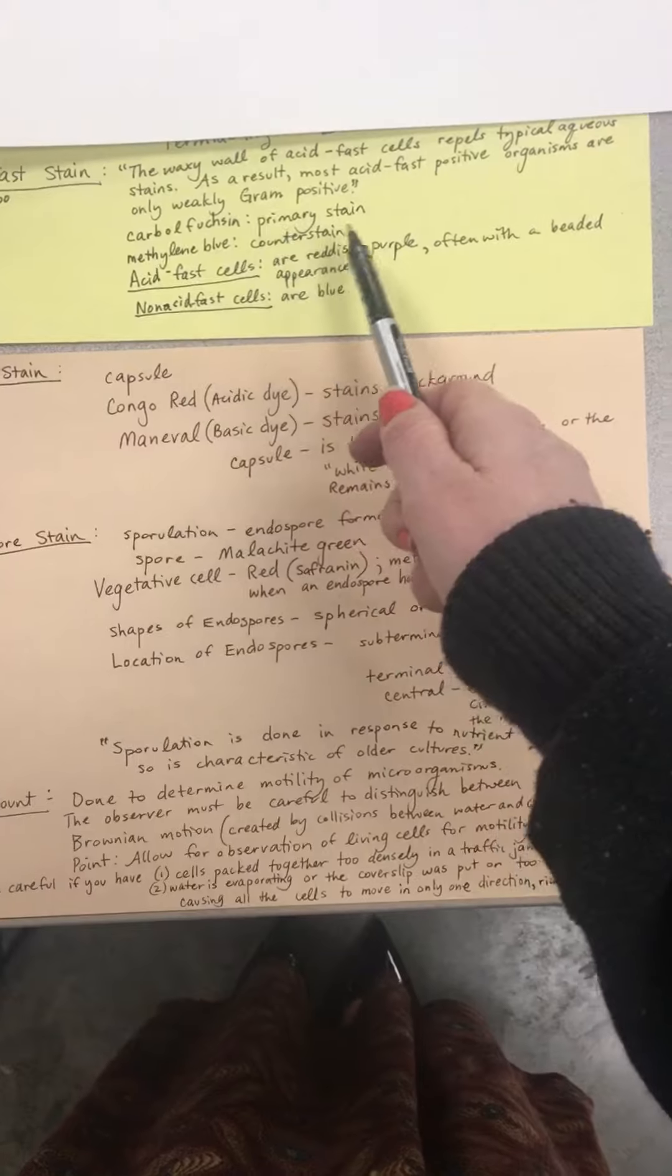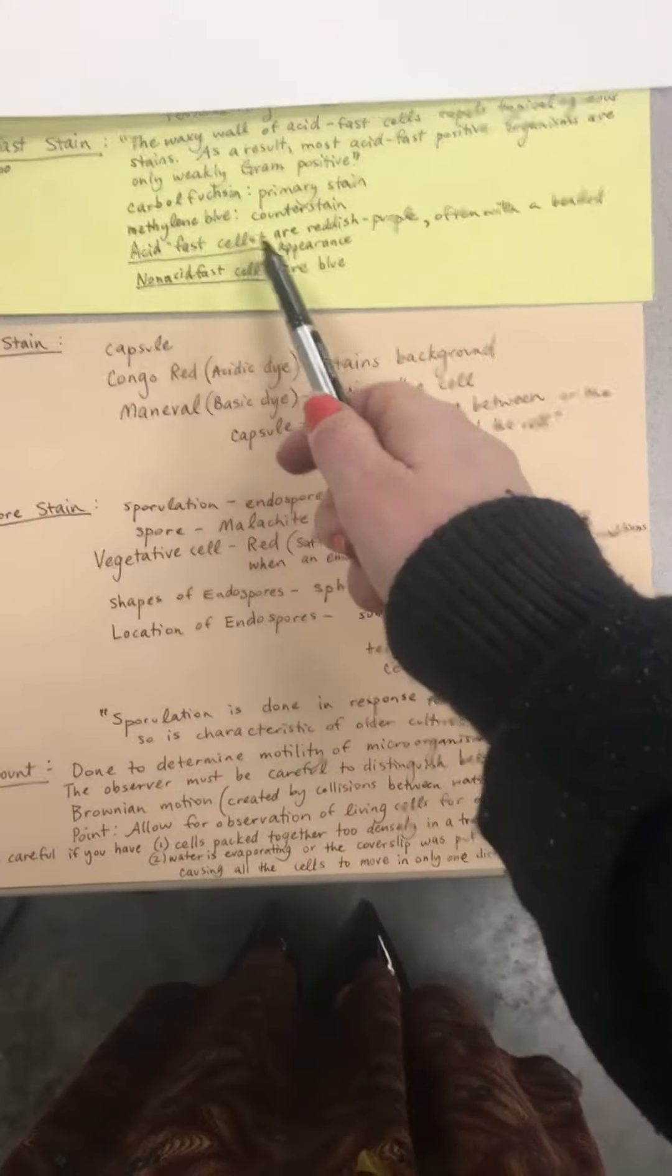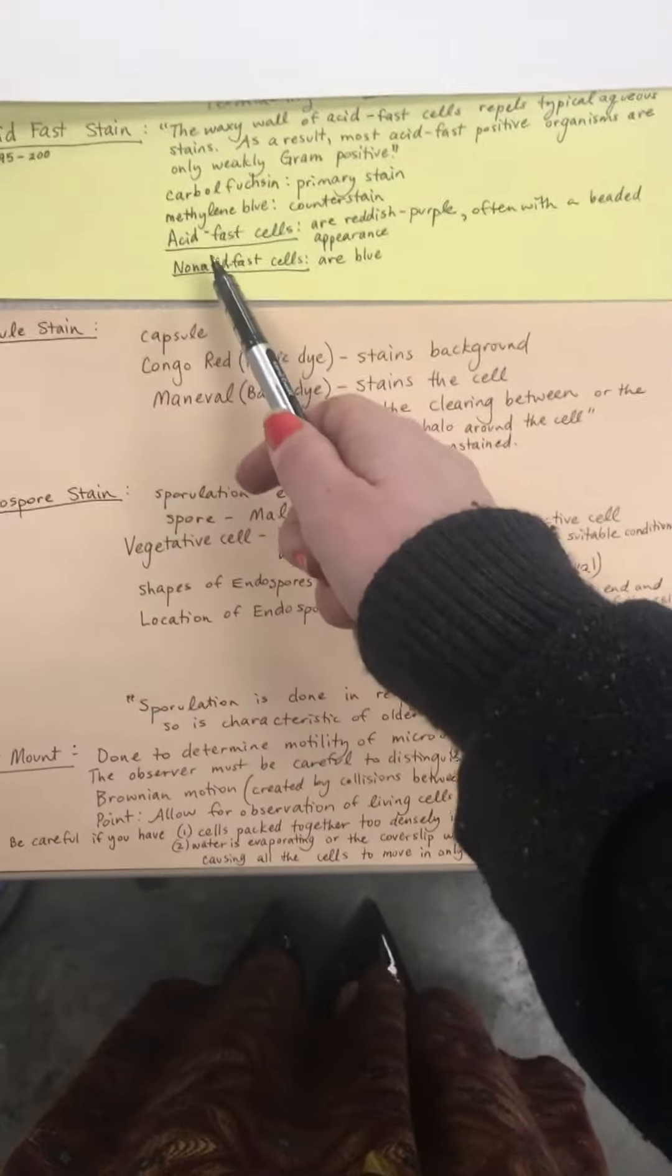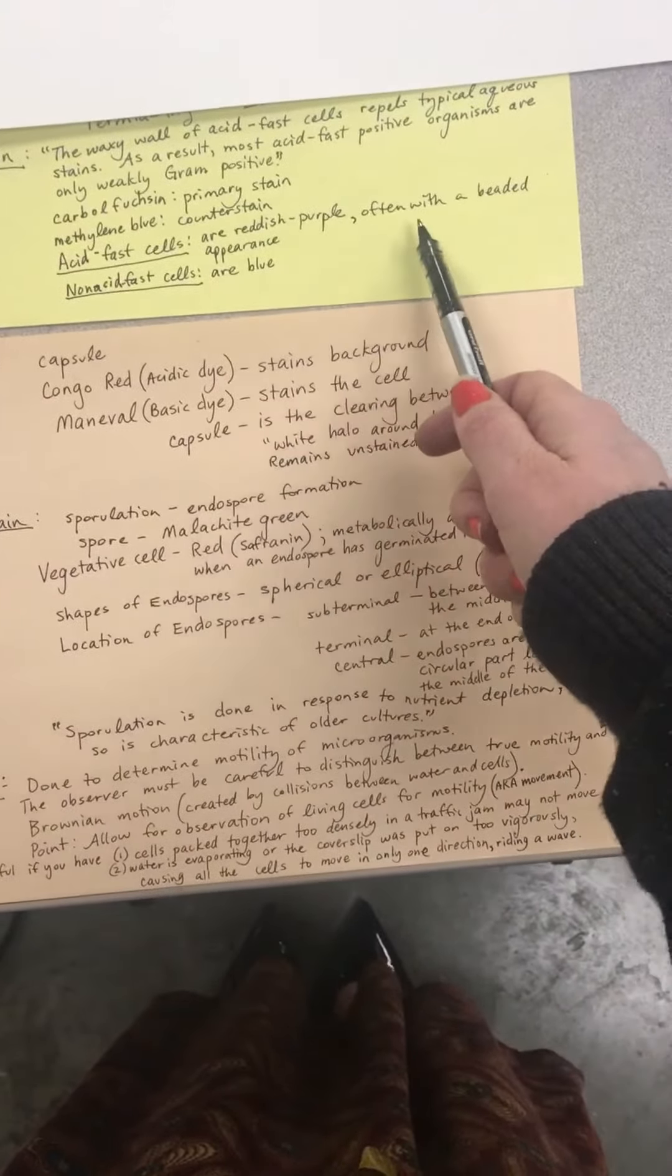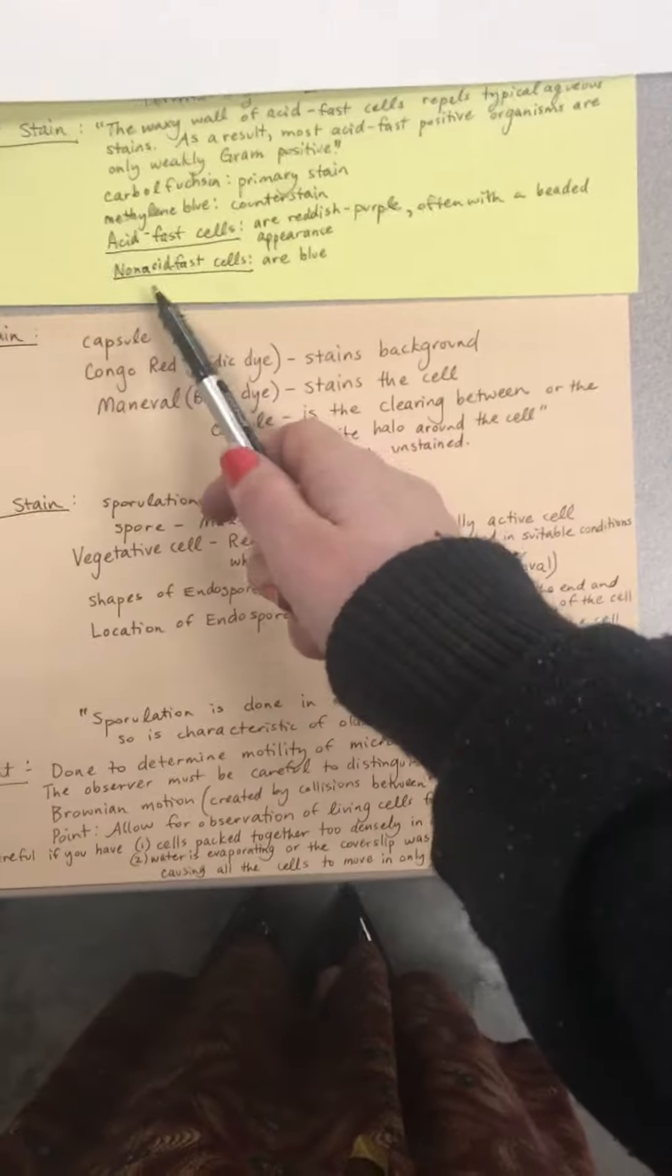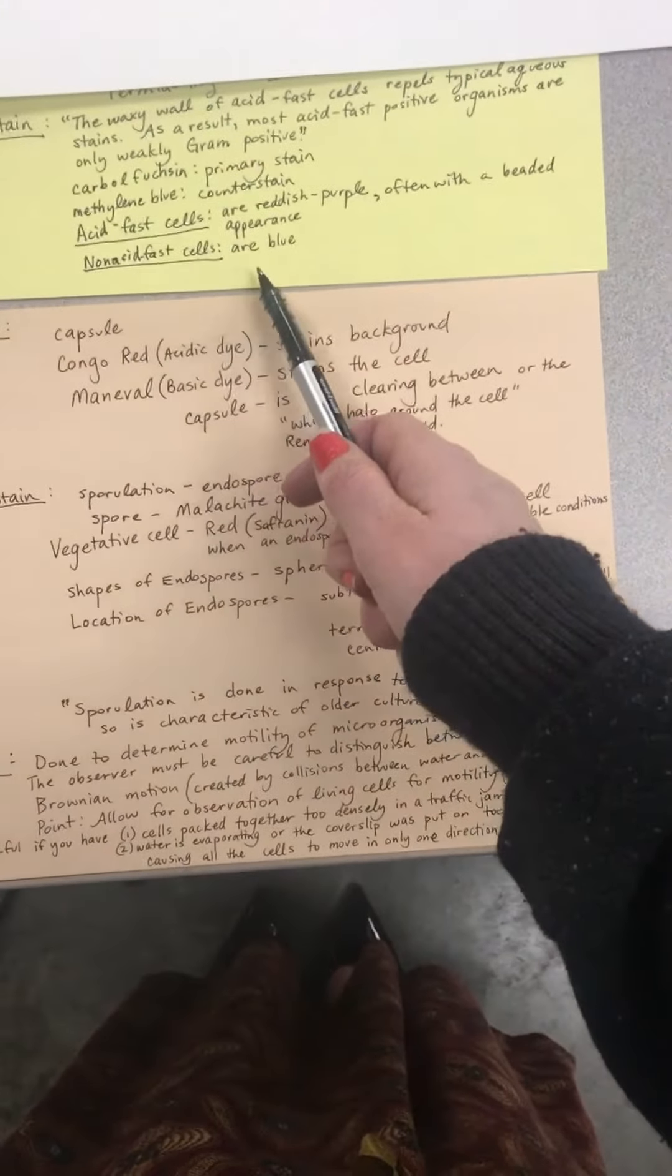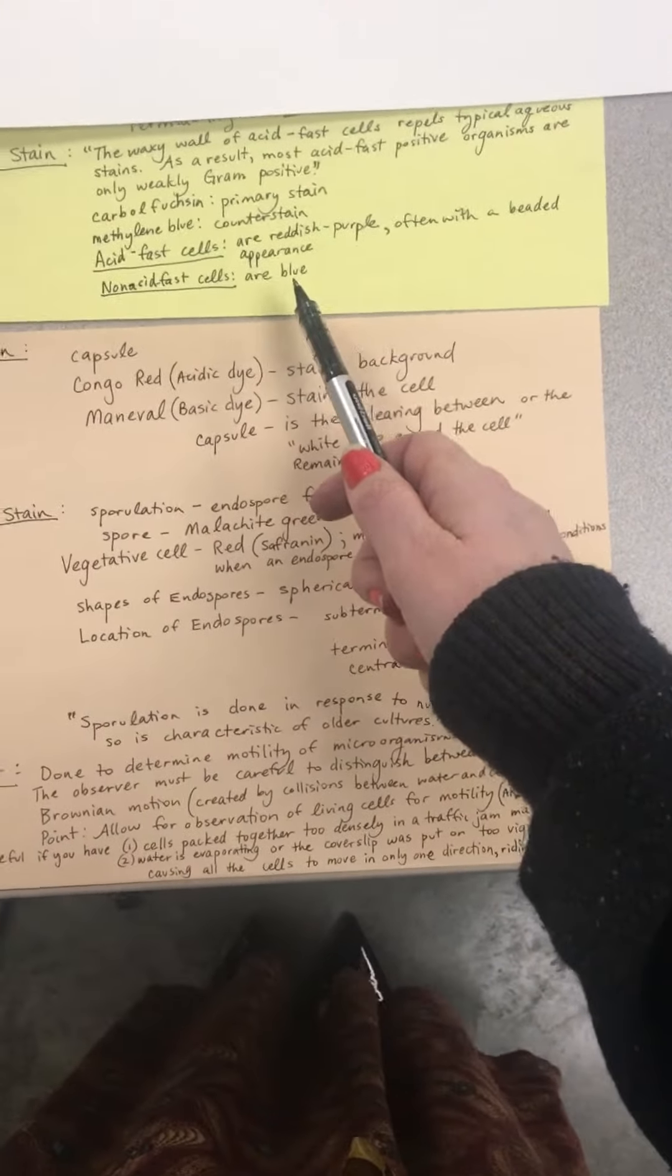The carbofusion is the primary stain and the methylene blue is the counter stain. Your acid fast cells will appear reddish purple, often with a beaded appearance. Your non-acid fast cells will turn out blue because of the methylene blue.